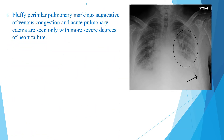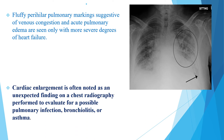Fluffy perihilar pulmonary markings suggest venous congestion and acute pulmonary edema and are only seen with severe degrees of heart failure. Cardiac enlargement is often noted as an incidental finding on chest radiograph performed to evaluate for possible pulmonary infection, bronchiolitis, or asthma, since wheezing is the most common presentation of both asthma and heart failure in infants. Sometimes we do a chest X-ray suspecting asthma or bronchiolitis and find huge cardiomegaly, prompting cardiac evaluation.